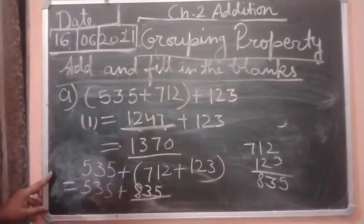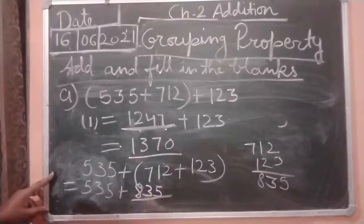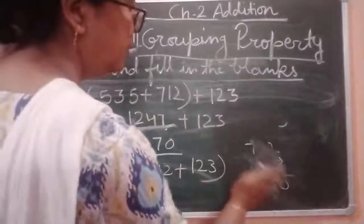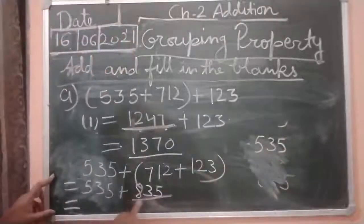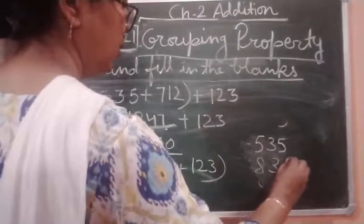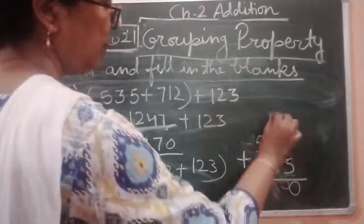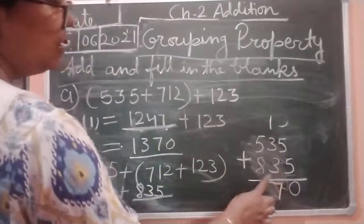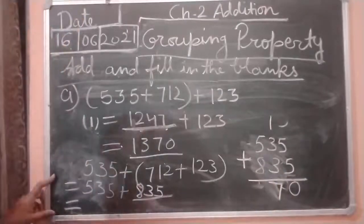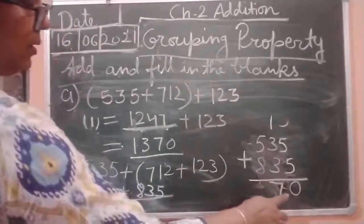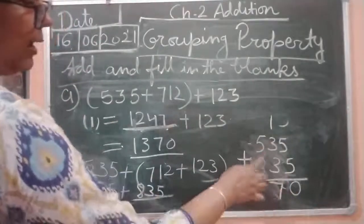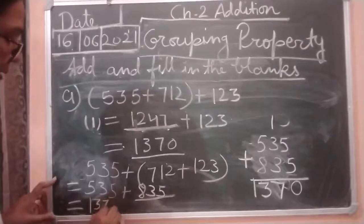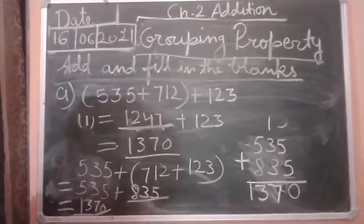After that we add 535 plus 835. Five plus five is ten, carry one; three plus three is six, plus one is seven; five plus eight is thirteen, carry one; and one. We are getting 1,370. Again we are getting 1,370.